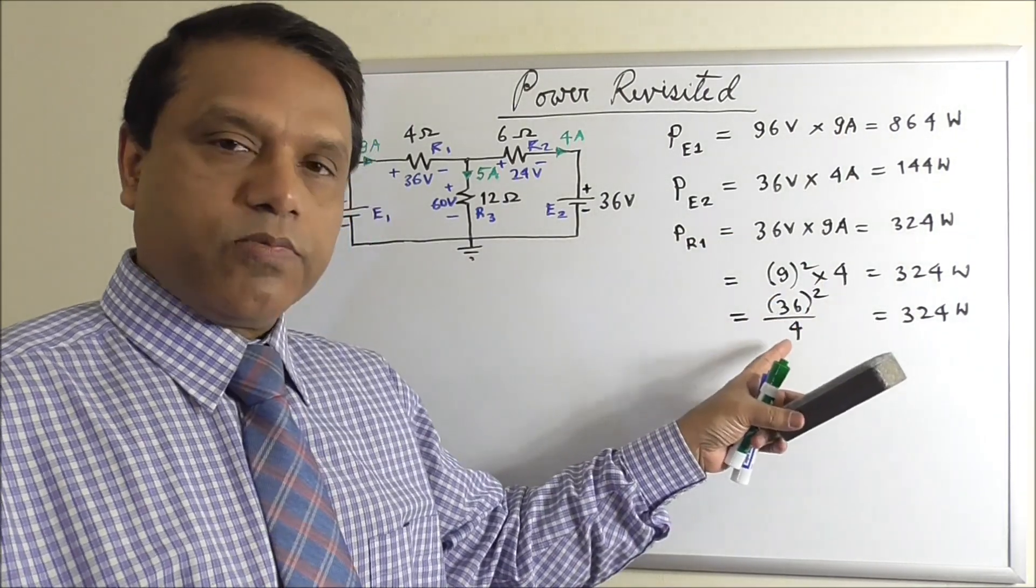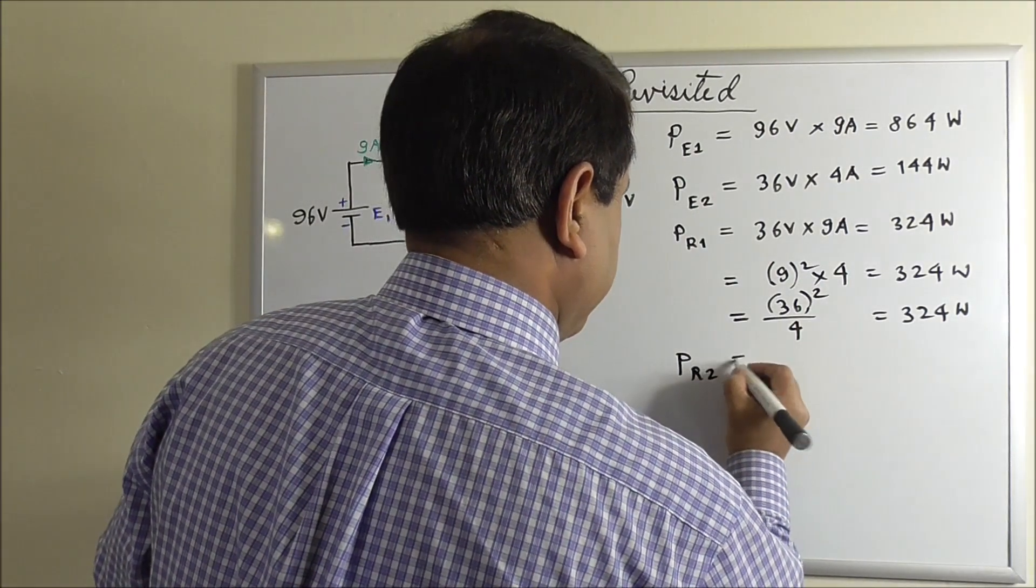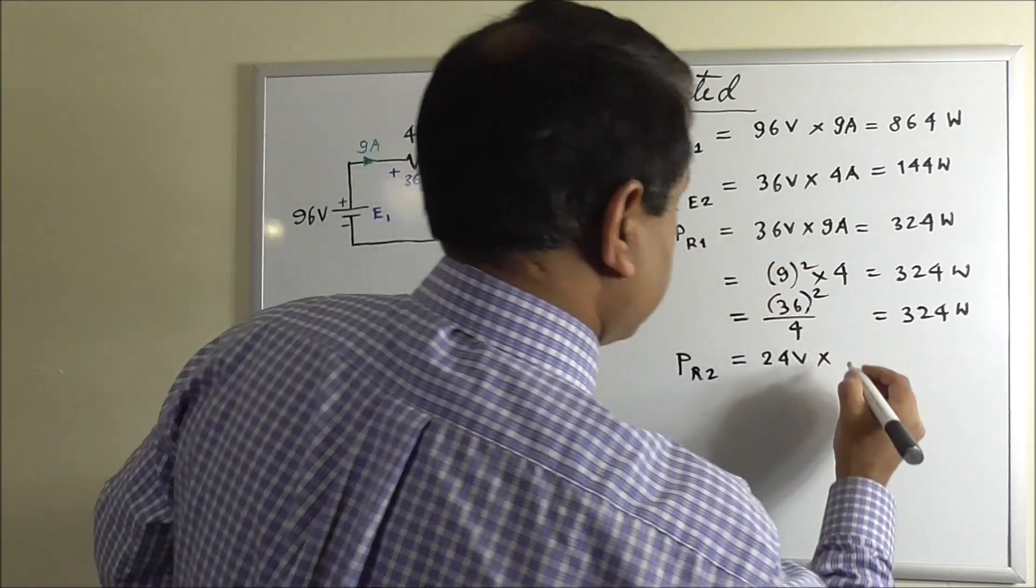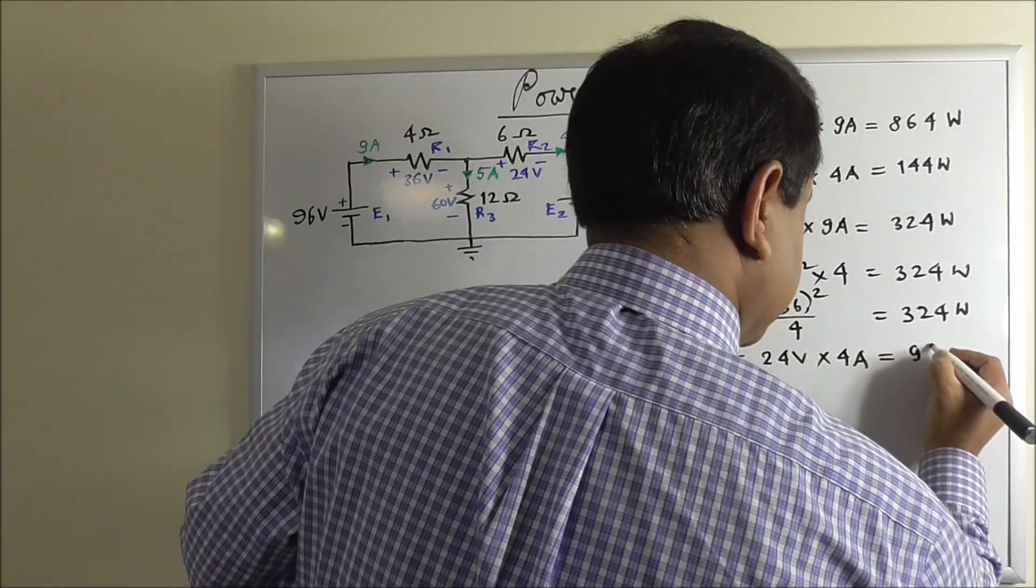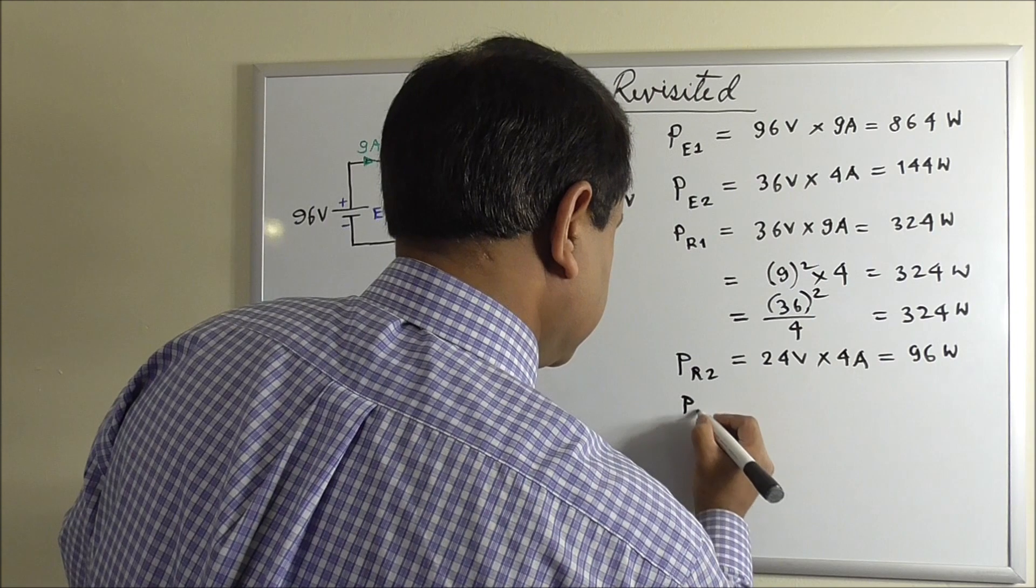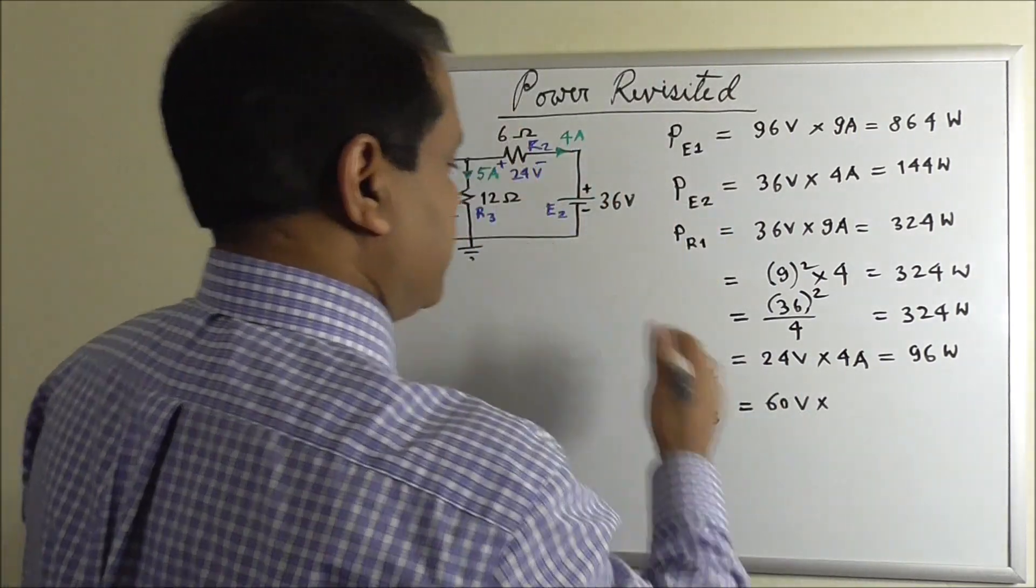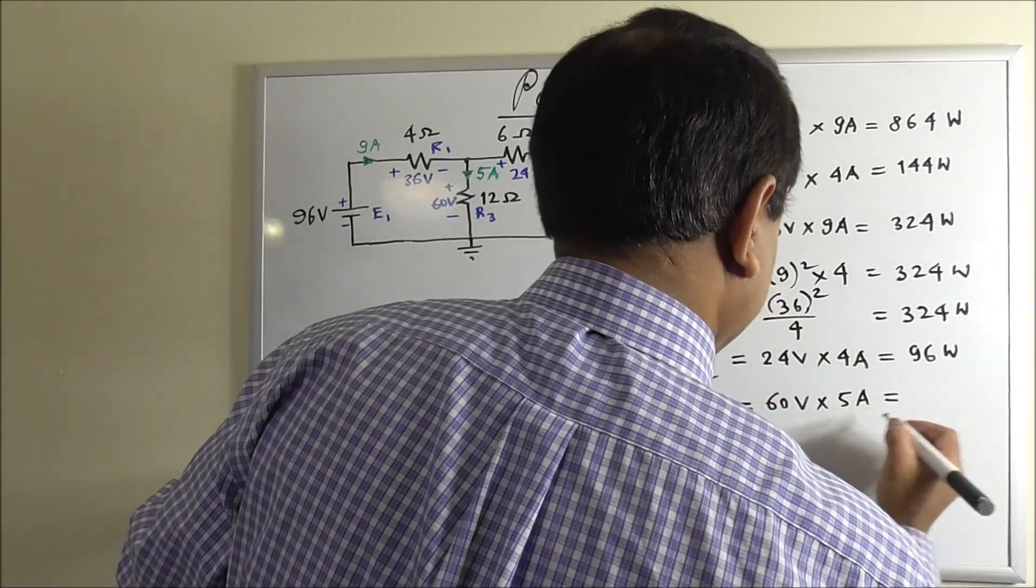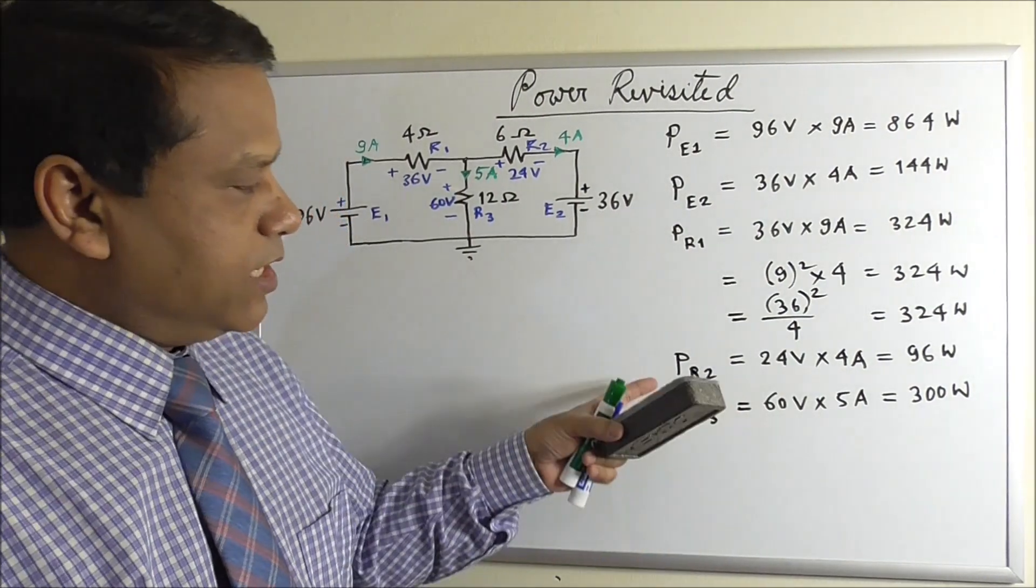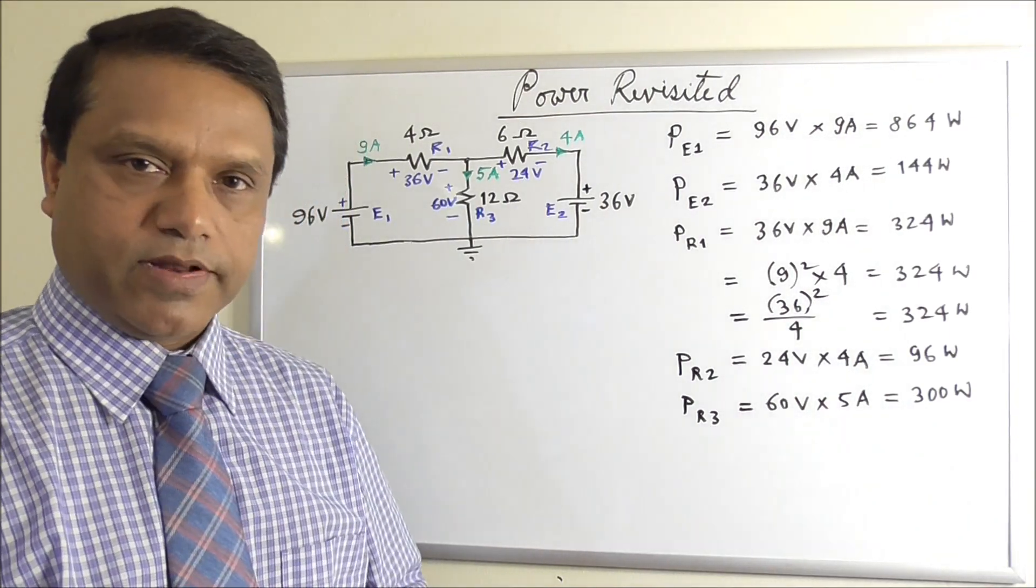And PR2 similarly is V times I, V is 24, I is 4 ampere. And PR3, the power of this resistor is, voltage is 60 volt, current is 5 ampere, 300 watt. We could have found PR2 and PR3 using the other two formulas, I²R or V²/R. We would have gotten the same answer.